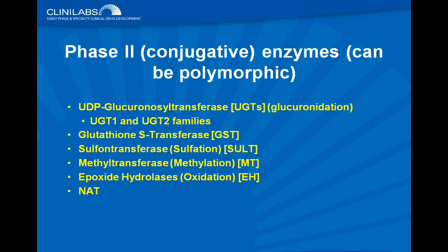The Phase II enzymes are the conjugative enzymes, which can also show genetic polymorphism. These include UDP-glucuronosyltransferase (UGTs), glutathione S-transferase, sulfotransferase, methyltransferase, epoxide hydroxylases, and acetyltransferase (NAT). What these enzymes do is add a group to a drug to make it more water-soluble so it can be eliminated from the body.